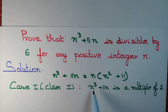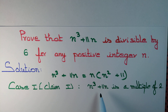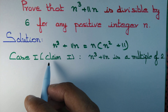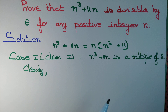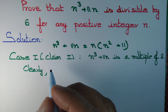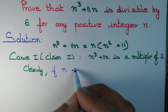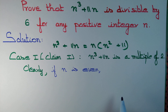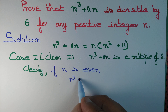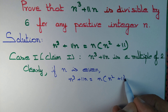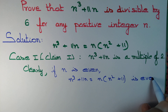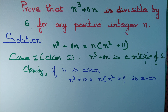Claim 1: n³ + 11n is a multiple of 2 for every n. We can see this clearly. If n is even, then n³ + 11n = n(n² + 11) is even, and even numbers are all multiples of 2. What if n is odd?